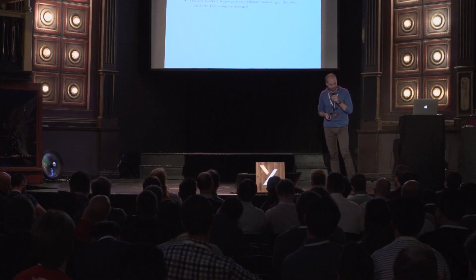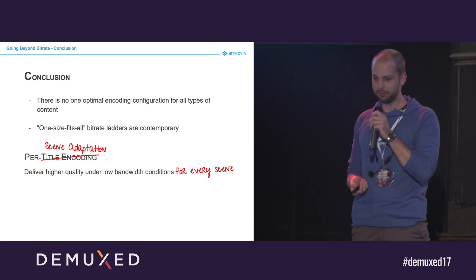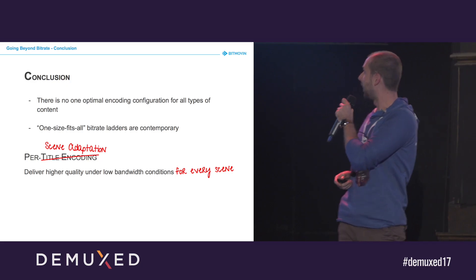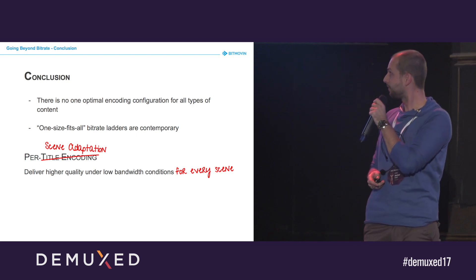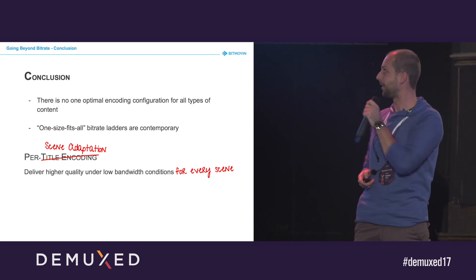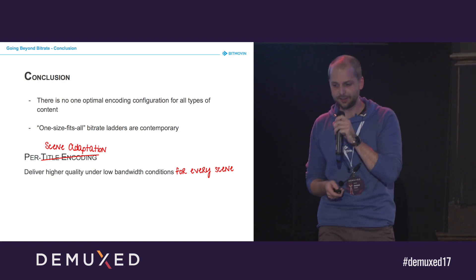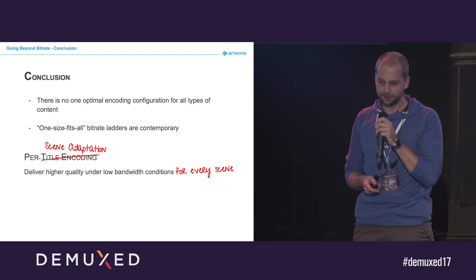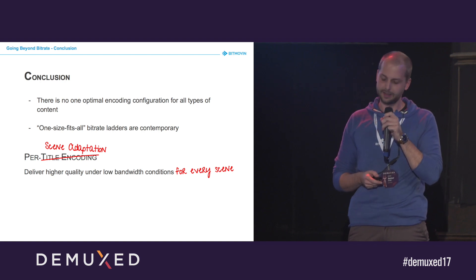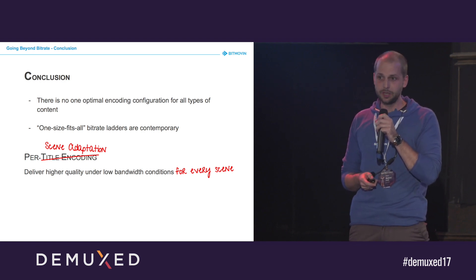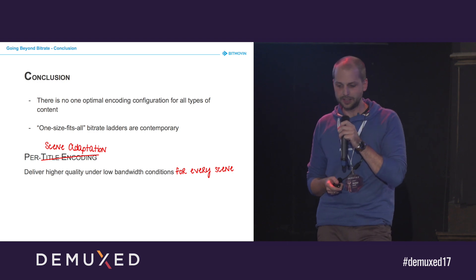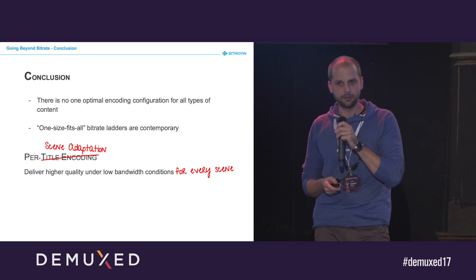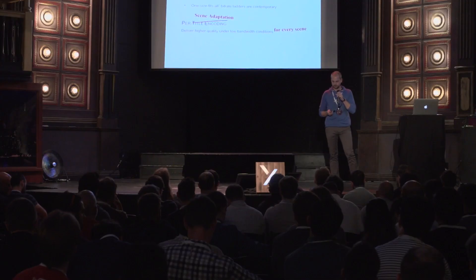In conclusion, please take away that there is no optimal encoding configuration for all types of content — we cannot go for a one-size-fits-all bitrate ladder. What we introduced, per-scene adaptation, delivers higher quality under low bandwidth conditions for every scene. Thank you.